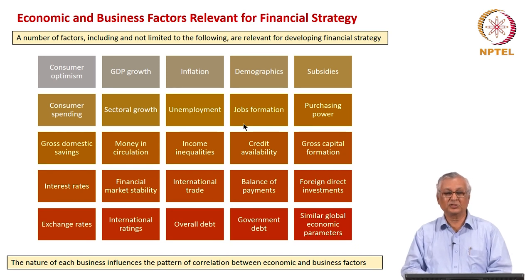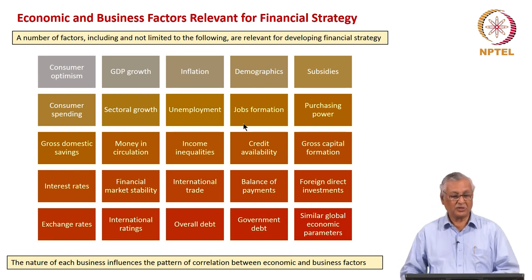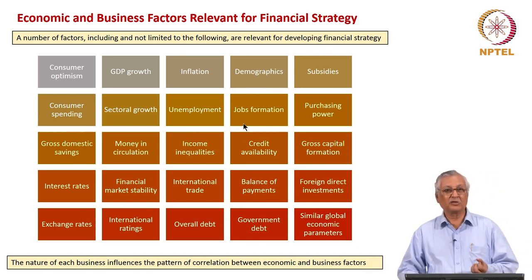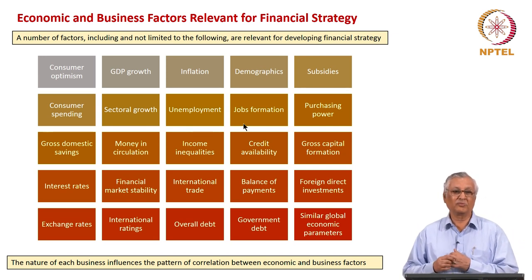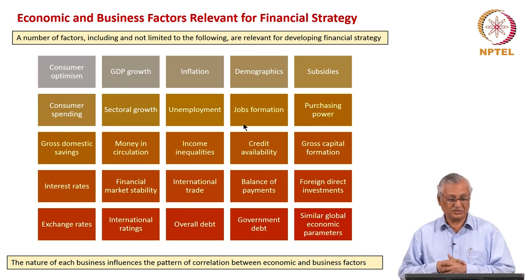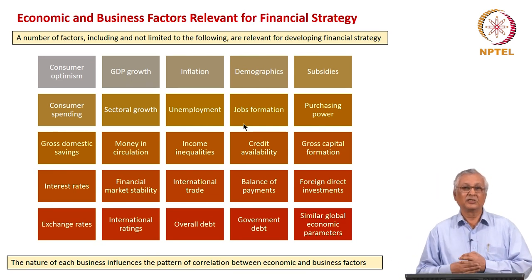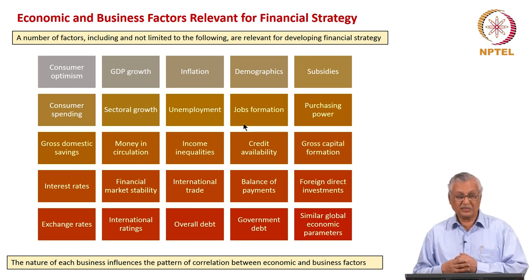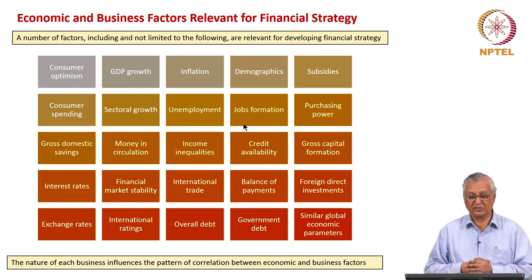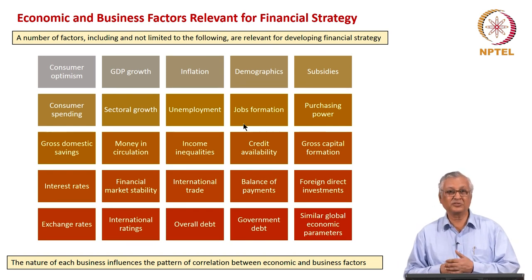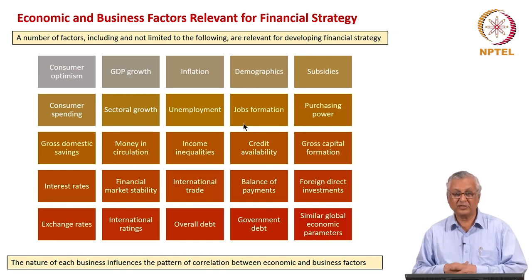There are a number of factors relevant for understanding and developing the financial strategy of the firm. At a consumer level: the level of consumer optimism, the pattern of consumer spending, the gross domestic savings, the interest rates, and the exchange rates. Then the GDP growth rate, the sectoral growth rate, the money in circulation, the CRR ratios, the statutory ratios which banks have to have, the financial market stability, and the international ratings of the economy are important. Inflation levels, unemployment, income inequalities, international trade, and overall debt are another set of important factors.